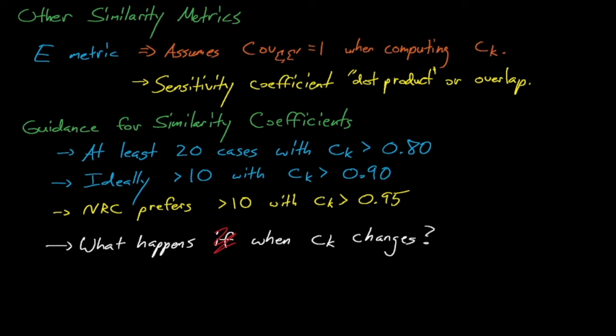Additionally, some of the other code validation methods that we'll discuss in this course, such as the Whisper and Surfer methods, offer us the ability to either add additional conservatism when we have an insufficient number of highly similar benchmark experiments, or to extract useful information about computational biases from systems that may only be marginally similar to our application.